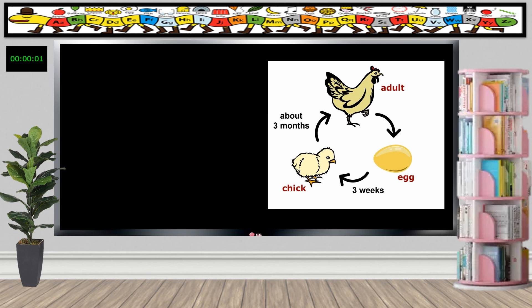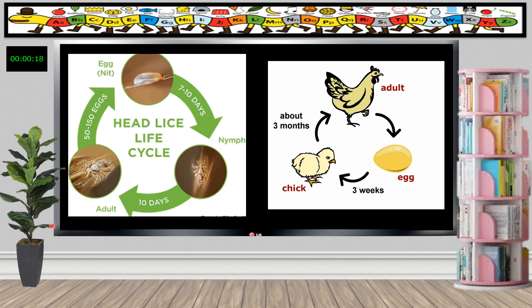Another example is the life cycle of the chicken: from egg to chick to adult chicken. You can see the chick almost looks the same as the adult chicken. Another example is our head lice. From egg (nit), to nymph, to adult louse — again, the nymph looks the same as the adult louse.